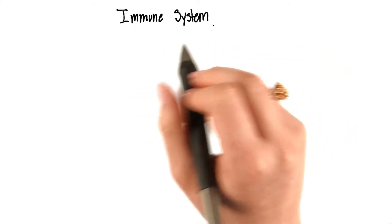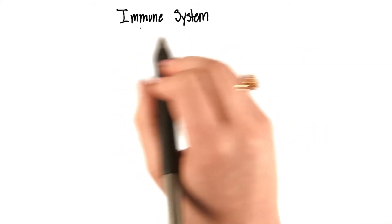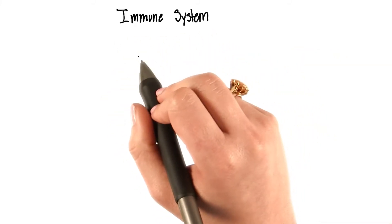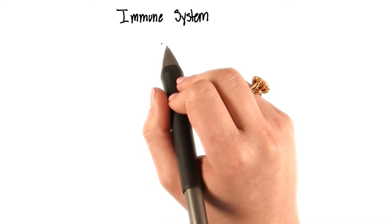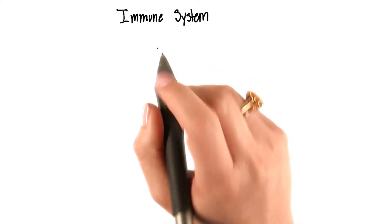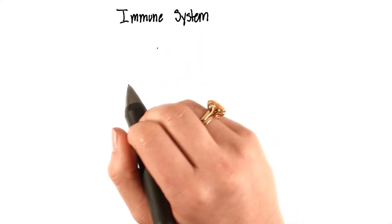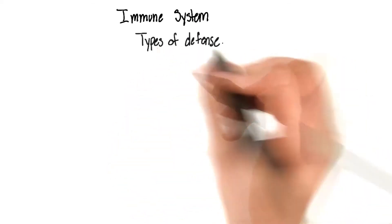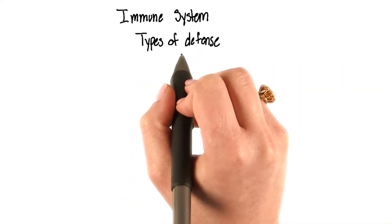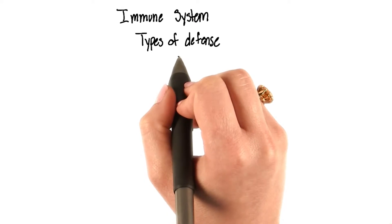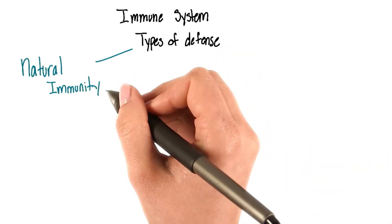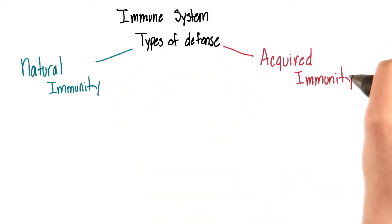At this point, let's turn to an overview of our immune system to help us understand exactly what's happening in our bodies and our ability to fight off illnesses. There are two types of defense we have as humans: we have natural immunity and we have acquired immunity.